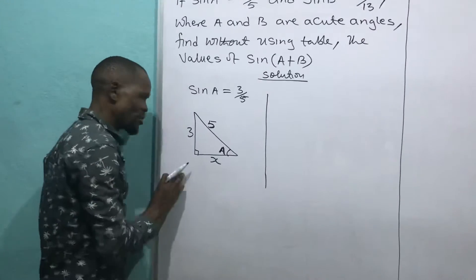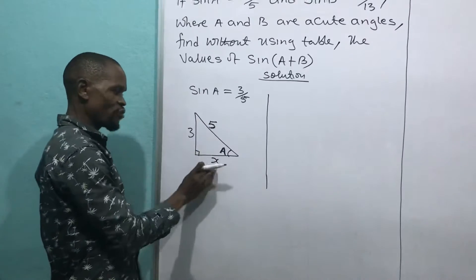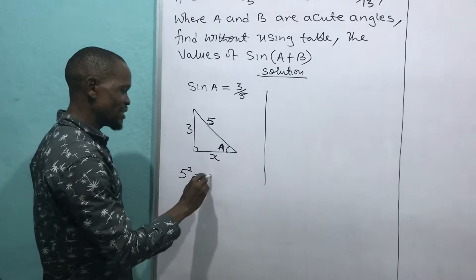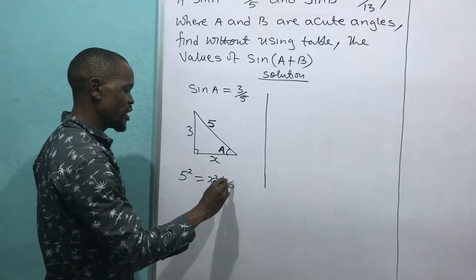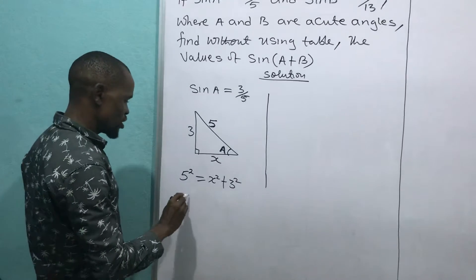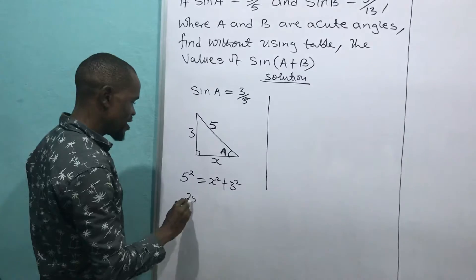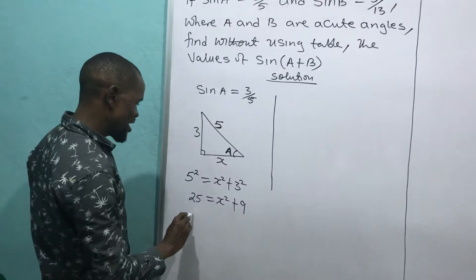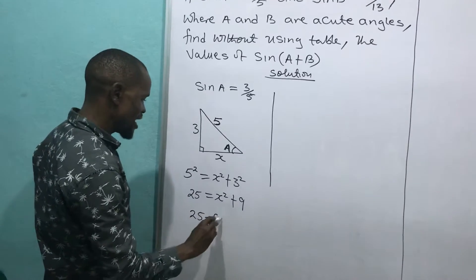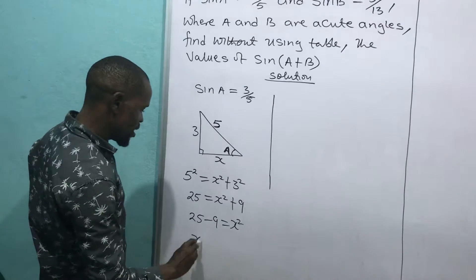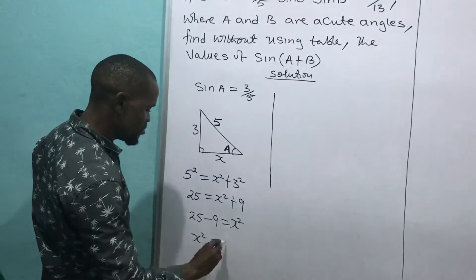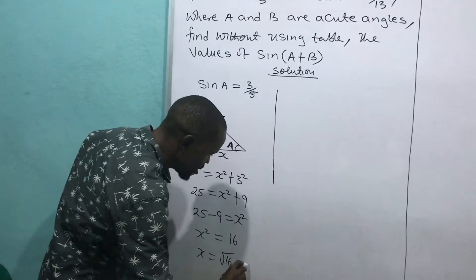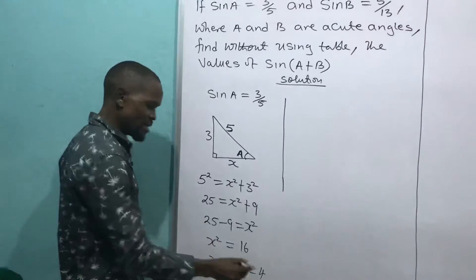Using the Pythagorean theorem, since I have called the adjacent side X: hypotenuse squared equals adjacent squared plus opposite squared. So 5 squared equals X squared plus 3 squared, giving 25 equals X squared plus 9. Therefore X squared equals 25 minus 9 equals 16, so X equals the square root of 16, which is 4.